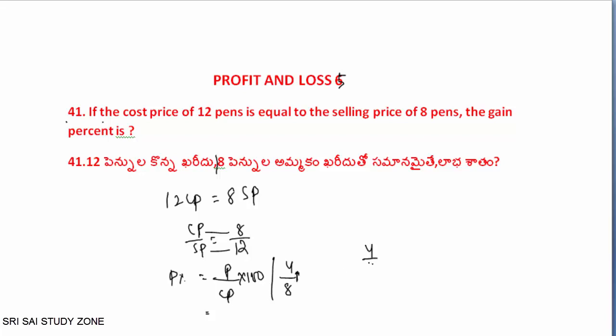So, 4 by 8 into 100, that equals 2 times — going to the end — and 50 times going to the end. Therefore, profit percentage is 50 percent.